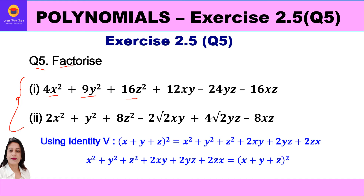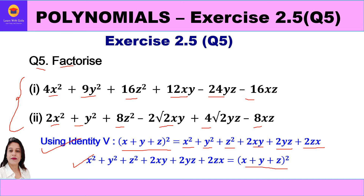Each product has six terms, as you can see. Now, which identity has six terms in the product? Naturally it is Identity 5, which has the product x² + y² + z² + 2xy + 2yz + 2zx, whose factors are (x + y + z) whole square. So whenever we have six terms in the product, the factors are (x + y + z)².